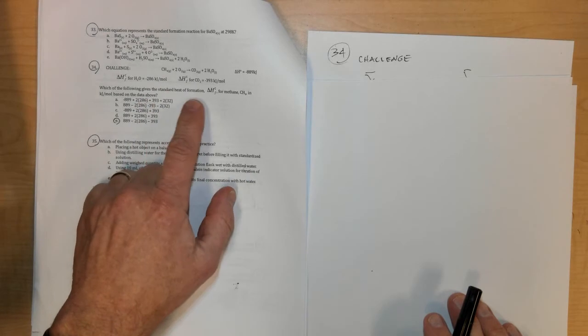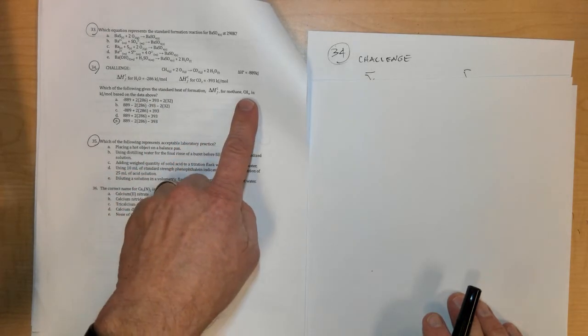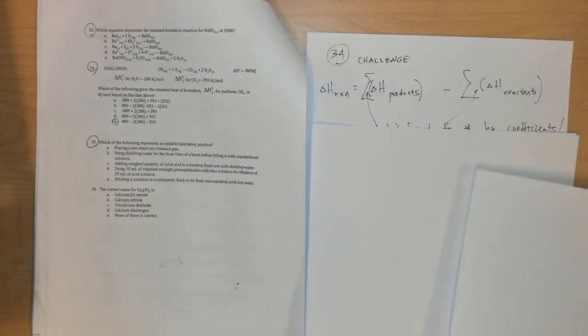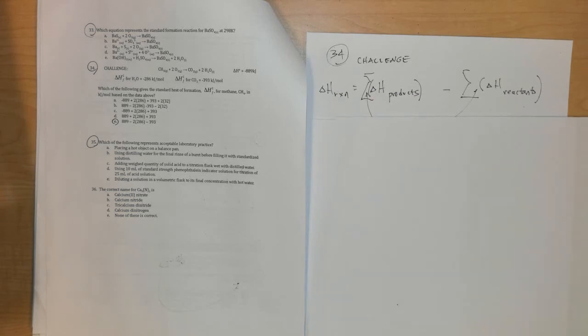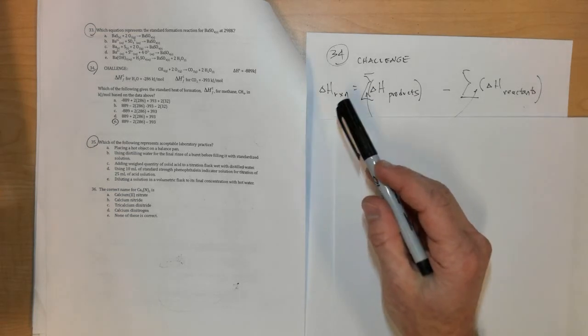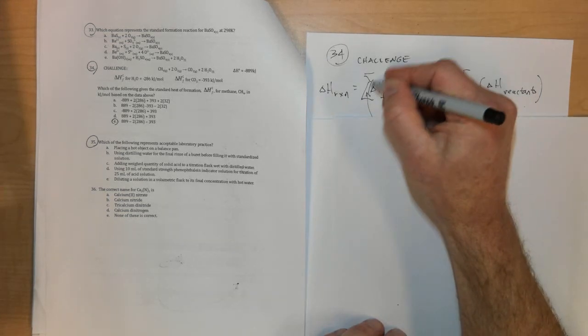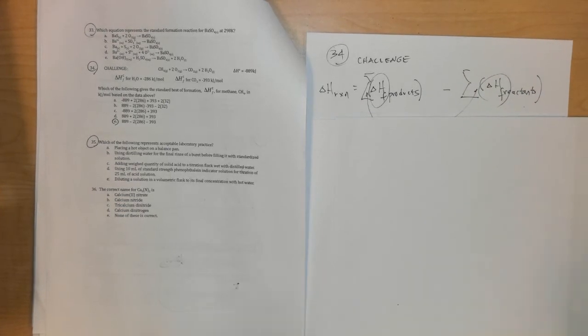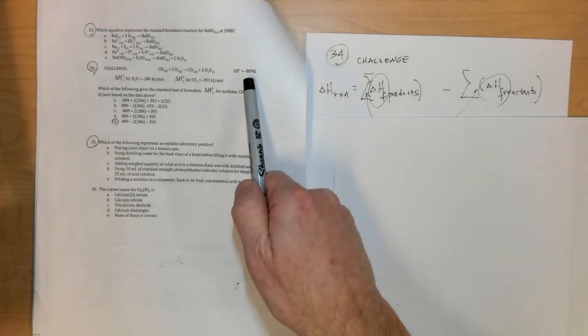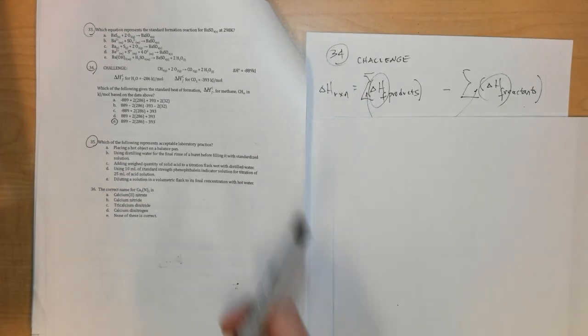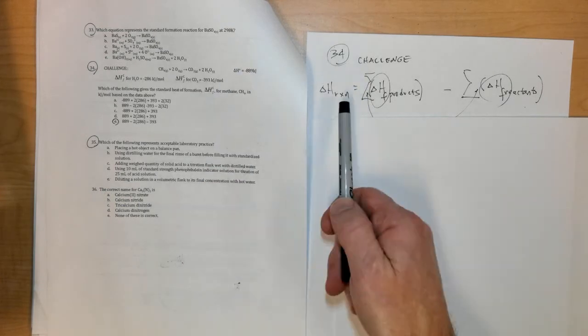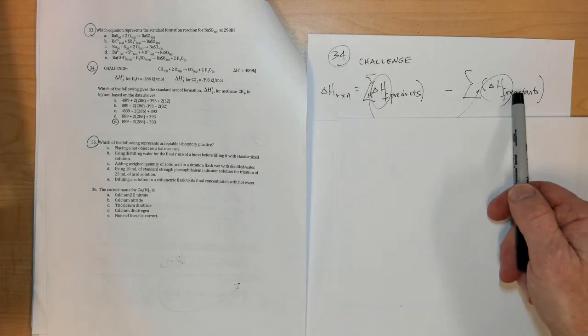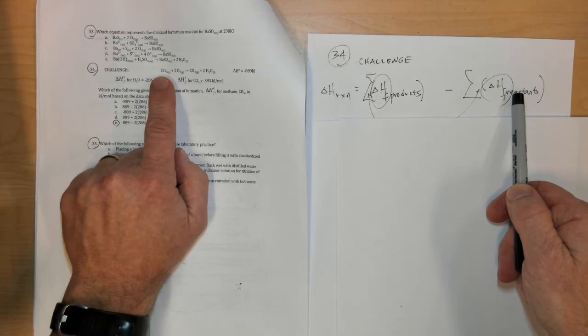Next one is number 34, a challenge problem. In number 34 it asks us to find the standard enthalpy of formation for methane, and what you need to know for this is how to use enthalpies of formation to find enthalpies of reaction. The enthalpies of formation could be subtracted from one another to find the difference in order to find the enthalpy of the reaction. But in this problem it's challenging because they give you the enthalpy of the reaction and they want you to find one of the enthalpies of formation - in this case they want you to find a reactant's enthalpy of formation, CH4.